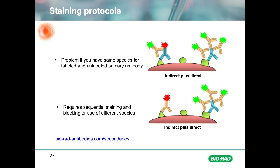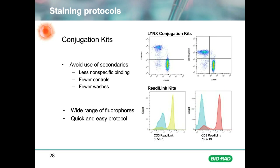You can also use primary antibodies from different species — for example, rat and mouse — and the secondary will only bind to one of the primaries. For more information on available secondaries and to use the secondary selector tool, go to bioradantibodies.com/secondaries. An alternative to secondary antibodies is to use a conjugation kit, which allows you to directly label your primary antibodies, avoiding potential issues such as loss of cells through excessive washing and amplification of non-specific signals.